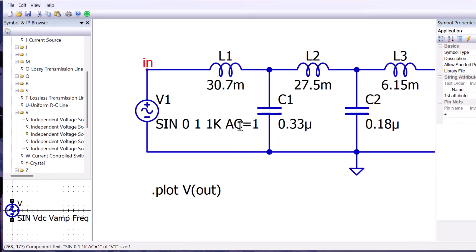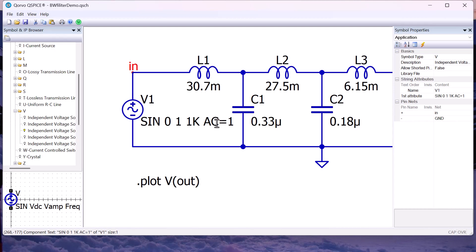Next, we'll add the AC analysis simulation command. We want to use the place text SPICE directive command, which we can access with a right click.